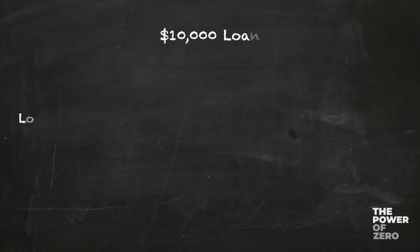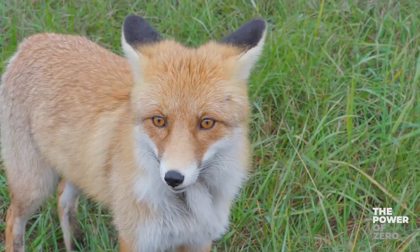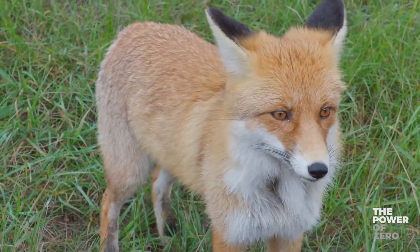In a perfect world, the rate of interest the insurance company credits to the IUL's loan collateral account is exactly the same as what they charge in the loan account. In other words, if they always credit you 3% and they always charge you 3%, then the net cost to you will always be zero — thus tax-free and cost-free. However, some companies will tell you that they'll always credit you 3%, but then reserve the right to charge you 4%, 5%, or 6% at their sole discretion.